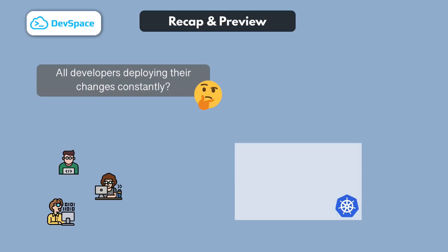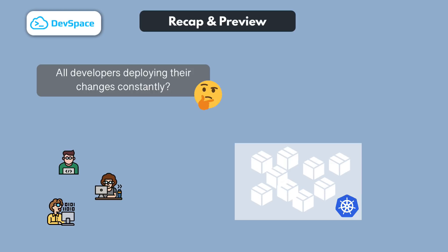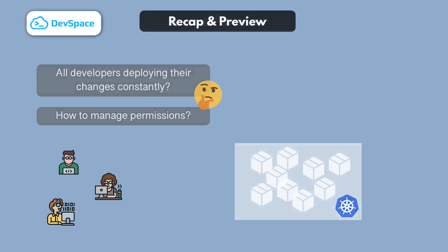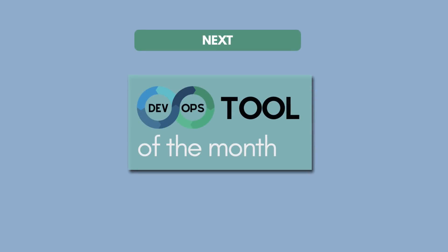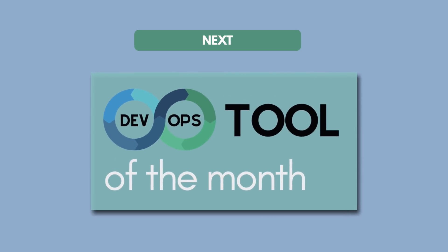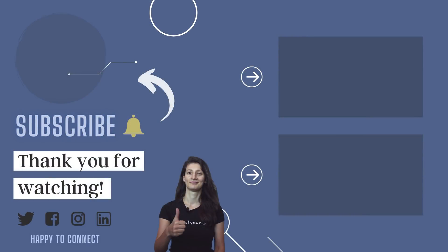Now you may be wondering: what about the cluster state itself? What happens if every developer would push their changes into it all the time to test? Developers could mess up the cluster or interfere with other resources, and how do you manage permissions you give to developers to test in a Kubernetes cluster? There are actually really good solutions for that specific problem, and this will be the topic of our next video in the DevOps Tool of the Month series. So make sure to subscribe and stay tuned if you want to learn more about that. As always, thanks for watching and see you in the next video.